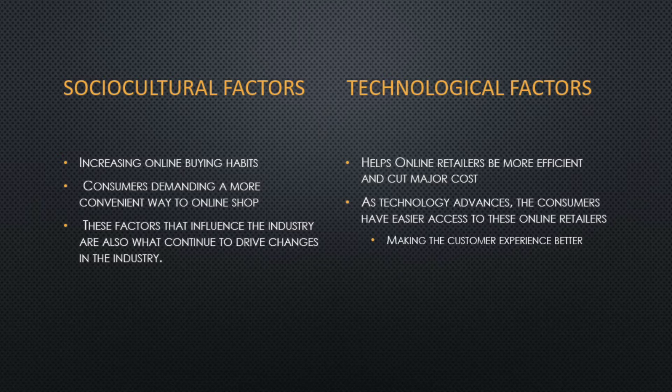With e-commerce being the fastest growing sales channel in the United States, it is important to recognize that buying online versus through brick-and-mortar stores enables the movement of leading sociocultural factors among the industry. The online retail industry also provides language capabilities to those in international markets. For example, Amazon and Walmart both provide an option to translate their online sites into a preferred language, regardless of geographic location, allowing for a decrease of barriers in this industry.